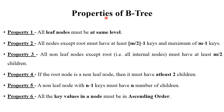Now, the properties of B-tree. When you generate a B-tree you must follow all these properties. First property: all leaf nodes must be at the same level. Second: all nodes except the root node must have at least ceil(m/2) - 1 keys. For example, if order is 3, you can store a maximum of two values in that node. All non-leaf nodes except the root must have at least ceil(m/2) children. If the root node is a non-leaf node, it must have at least two children.